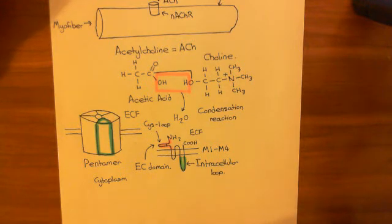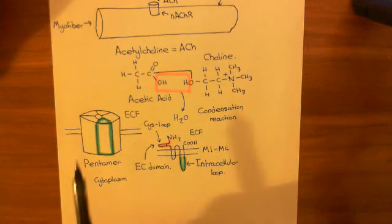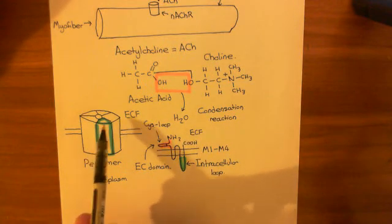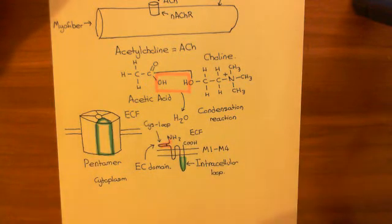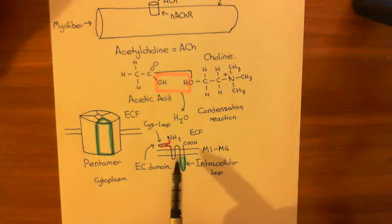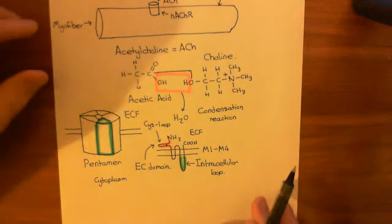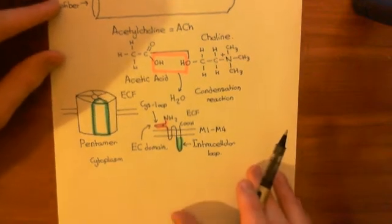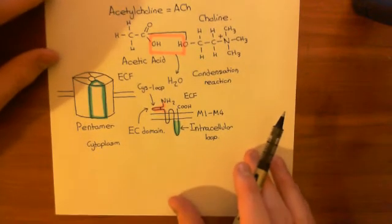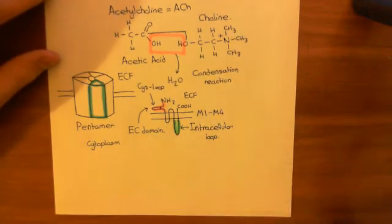We've seen that the nicotinic acetylcholine receptor is made up of these five separate subunits, and each one of these subunits has this sort of membrane-spanning topology. So let's now have a look at what a cys-loop actually is.